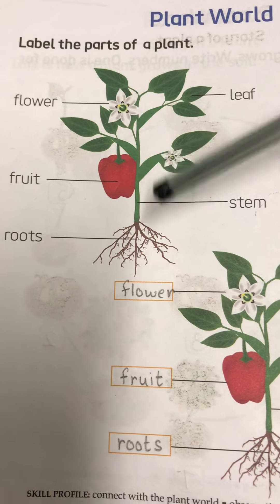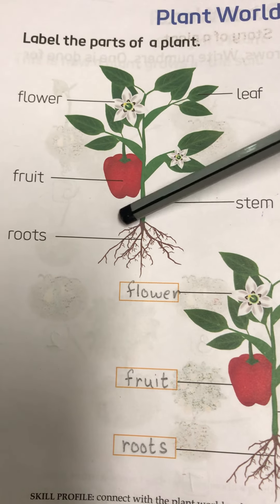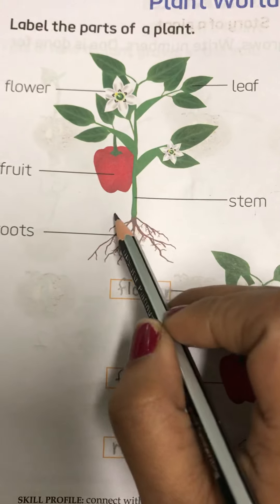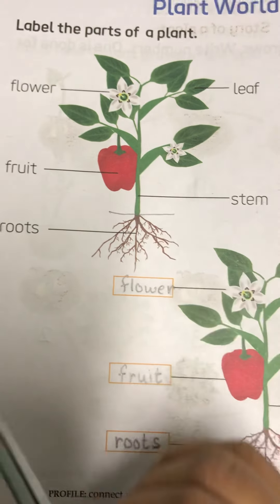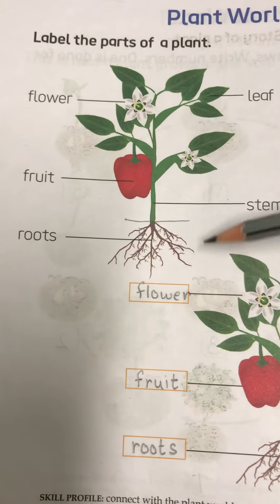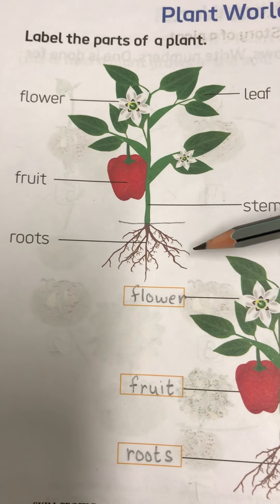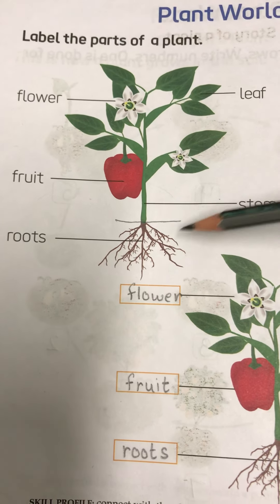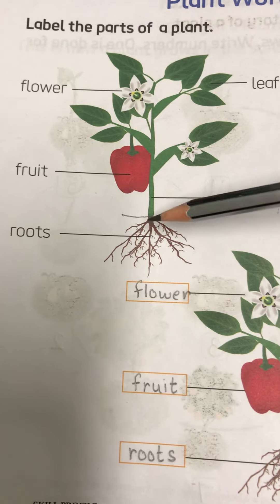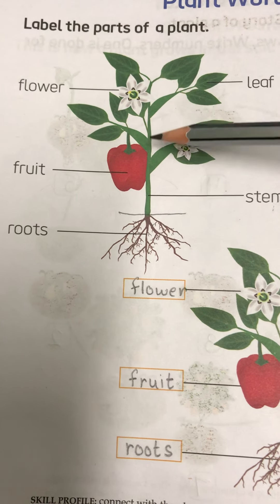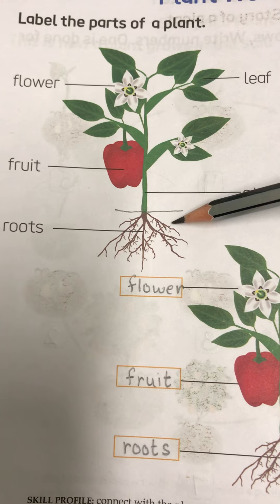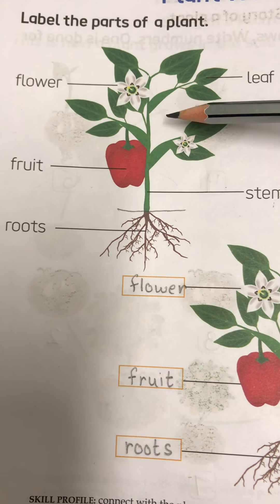Each plant is divided into two main parts. If I divide this plant, then it has two main parts: this is the root part and this entire upper portion is the shoot part.